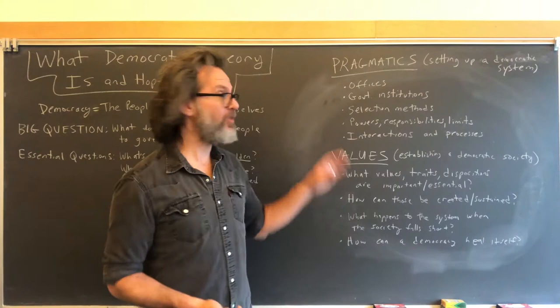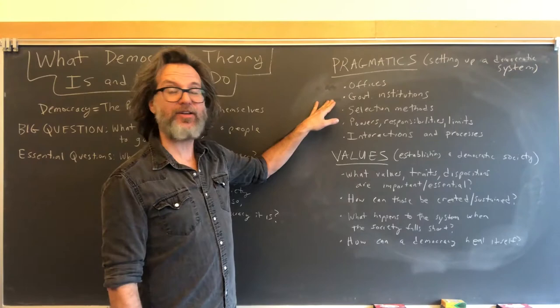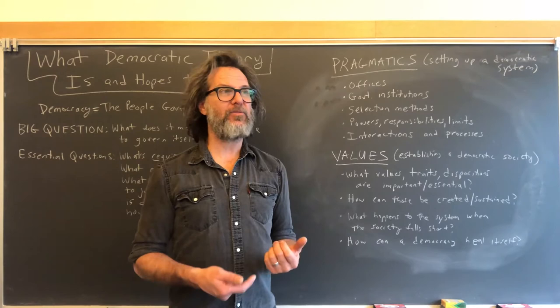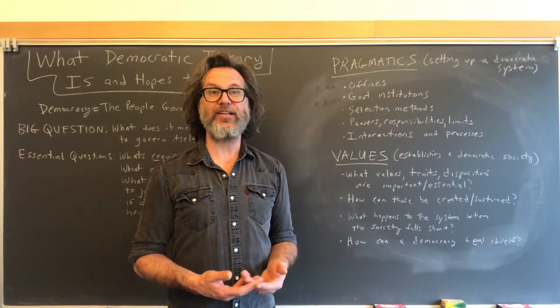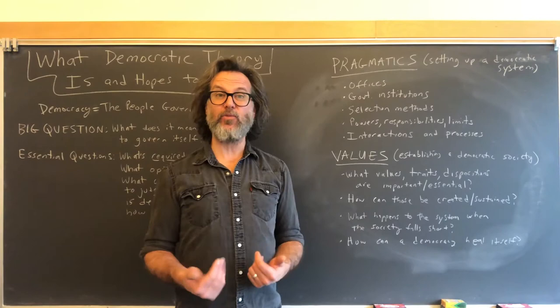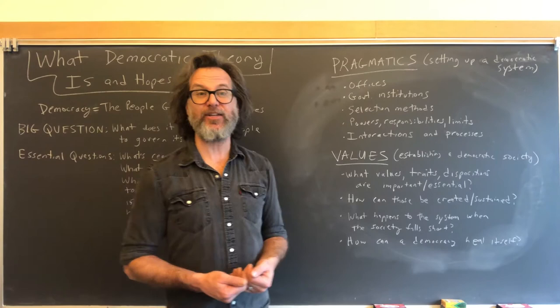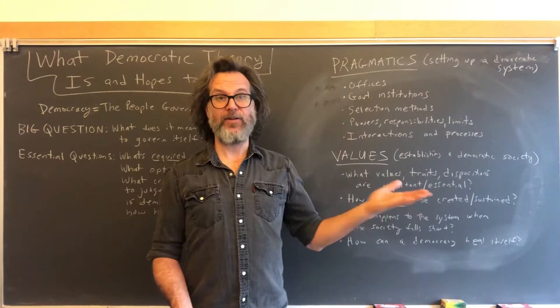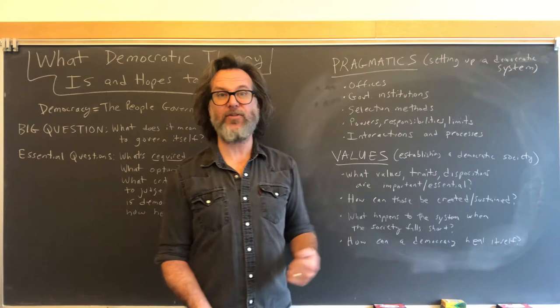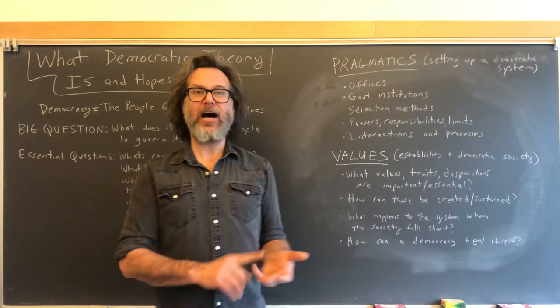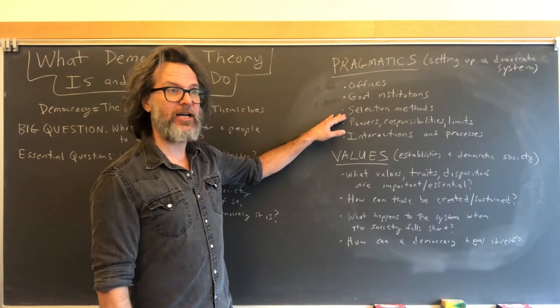Most constitutions — U.S. state constitutions as well as world democratic constitutions — do a lot more to answer the pragmatic questions than the U.S. Constitution does. Our constitution is extraordinarily short, less than 5,000 words, and leaves a lot up to subsequent process. Many constitutional conventions answer far more pragmatic questions at the foundational level. So there's a range: either a very large detailed rule book from the start, or a relatively small set of rules where the rule book is written as the rules are being played out.